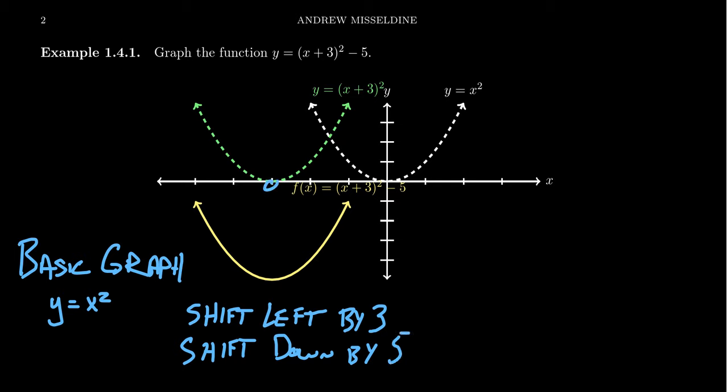And so taking this point we had before, (-3,0), we're going to shift it down by 5. 1, 2, 3, 4, 5. I'm just kind of counting the marks here on the y-axis. We shift everything down by 5. And so now we get this new point, (-3,-5). It went down.